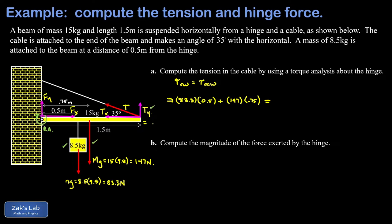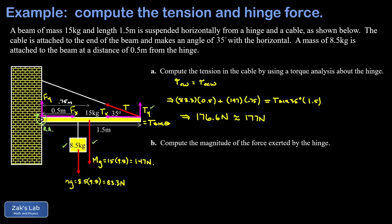We note that Ty equals T times sine of theta, so the counterclockwise torque is T sine 35° times 1.5 meters. T is the only unknown, so we add up the numbers on the left side and divide by 1.5 times sine 35. This gives us a tension of approximately 176.6 newtons, or 177 newtons to three significant figures.